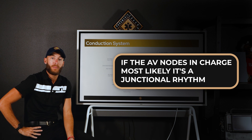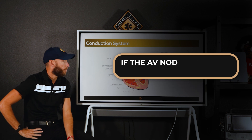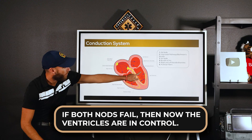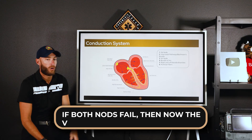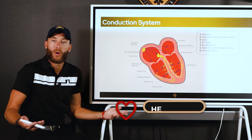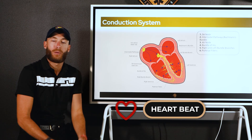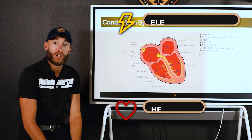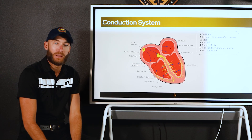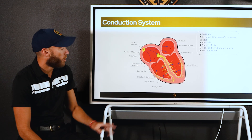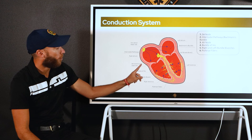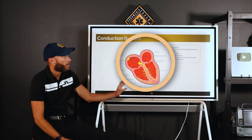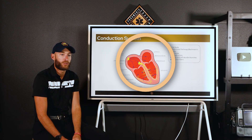If the SA node is blocked, it's most likely a junctional rhythm. If both the SA and AV nodes fail, the ventricles are in control. The ventricles alone do not produce electrical activity very well — that's a serious problem. This is what normal conduction looks like, and it's critically important for understanding EKG interpretation in paramedic school.